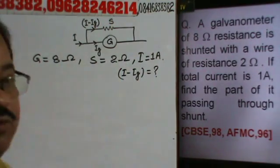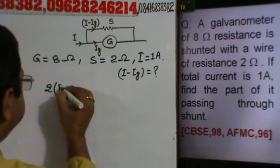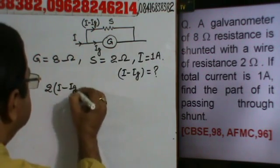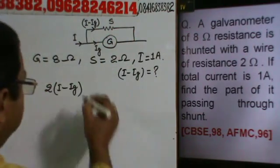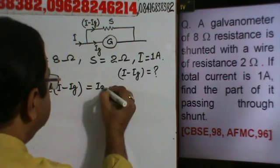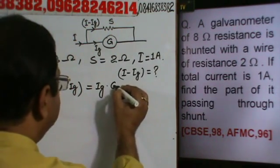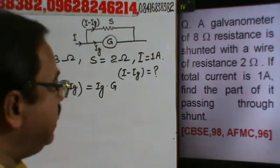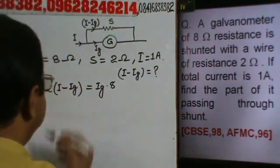Here we have shunted with a value, so directly we have to calculate 2 into I minus Ig. This is potential same, 2s into I minus Ig will be equal to Ig into G. And G's value is how much? G's value is 8.